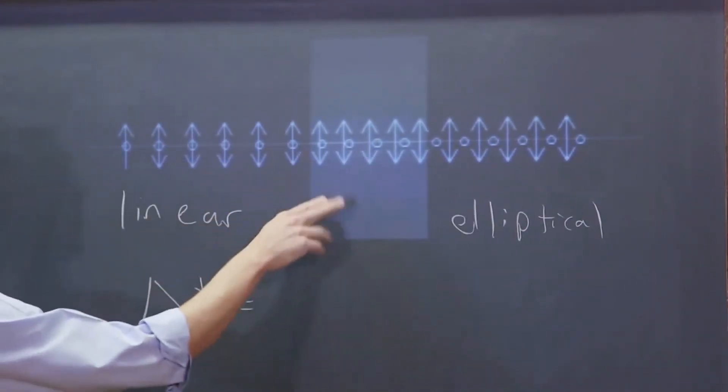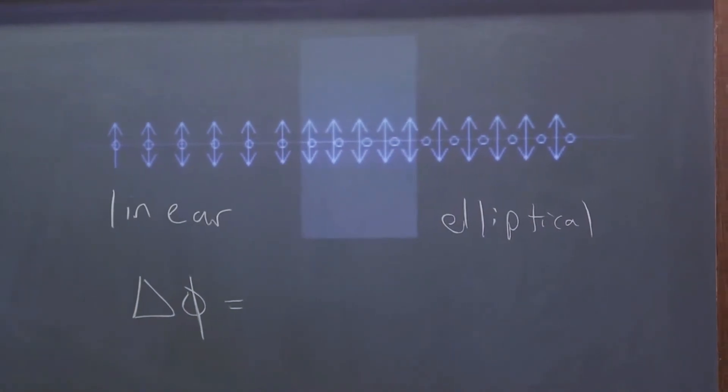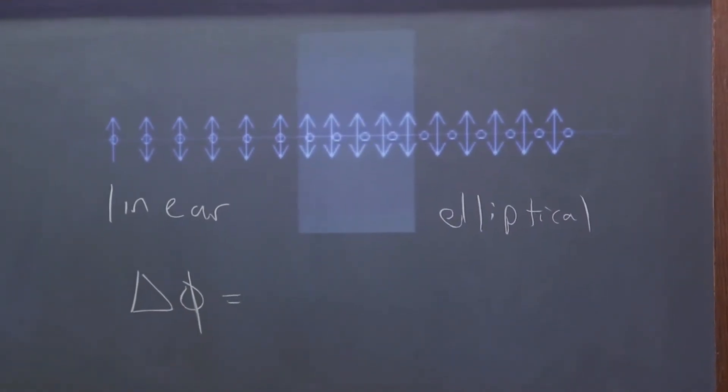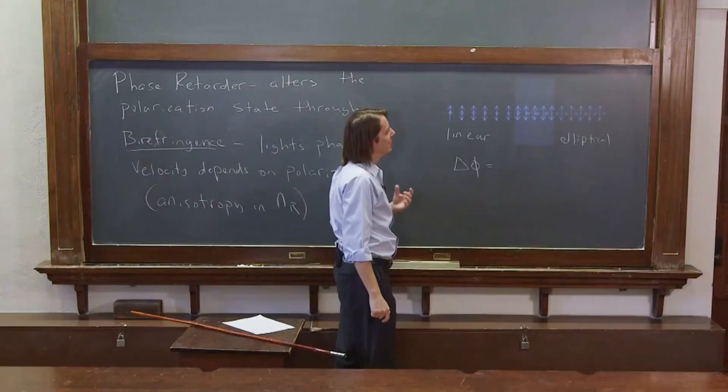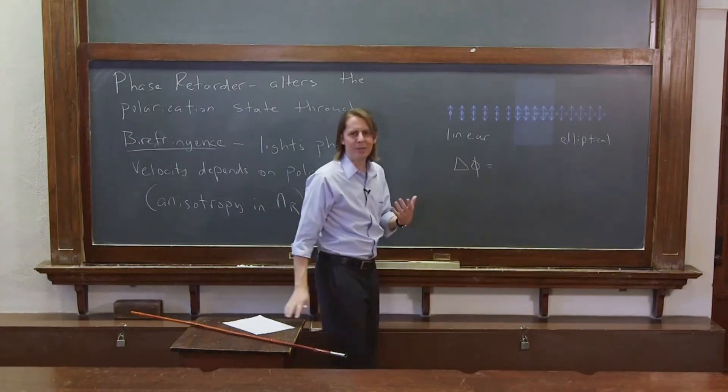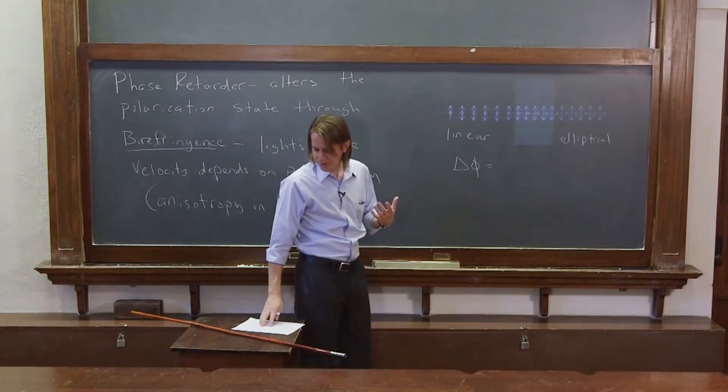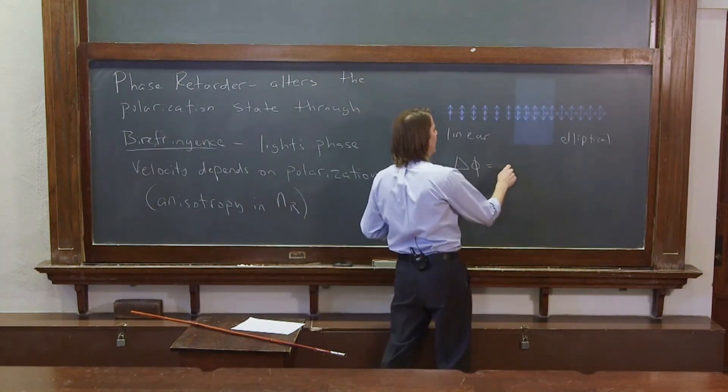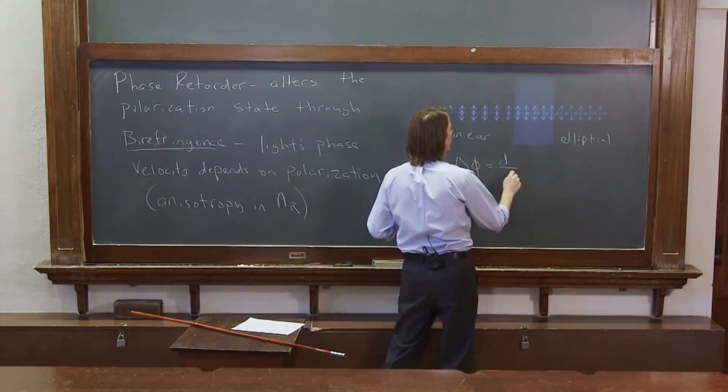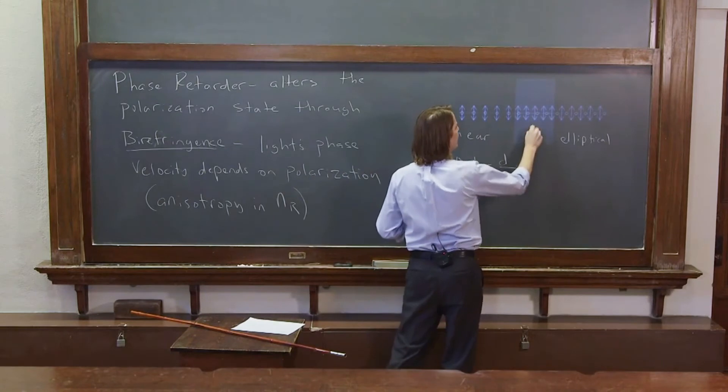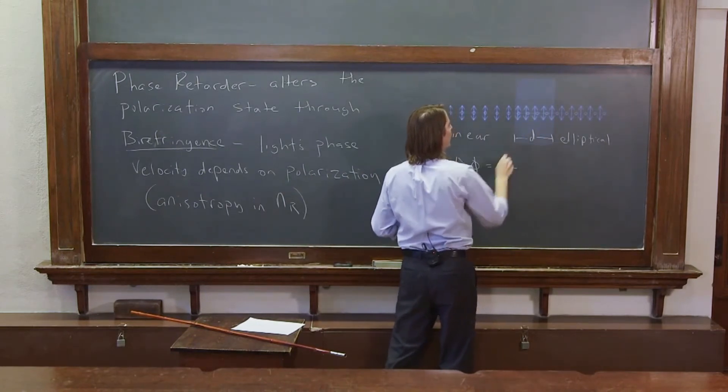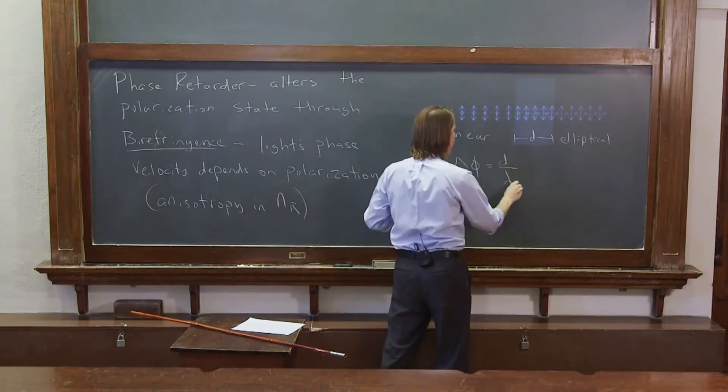These things are going through their little cycles, and it's going to depend on how much difference they build up each cycle. So it's going to kind of depend on that k vector, or we could think of it as how many cycles do they go through. So d, the distance, the thickness of the thing, divided by λ₀.